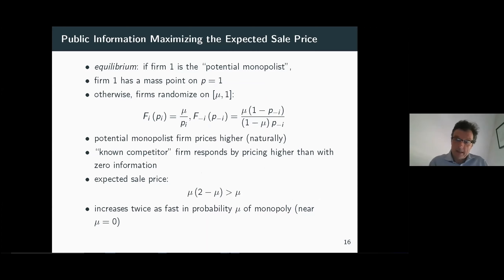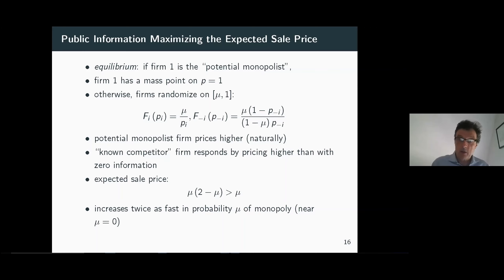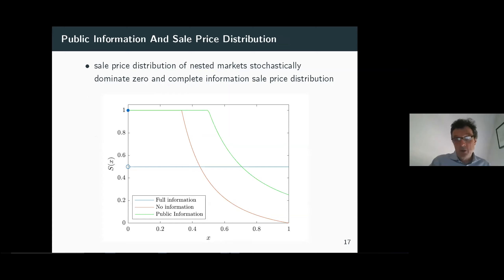We form an equilibrium where the expected sales price is higher — at the margin, twice as high as under zero or complete information. The marginal revenue now increases twice as fast in mu, the probability of monopoly. The resulting price distribution stochastically dominates the no-information price distribution, and the price distribution under public information lies strictly above the distributions from the two extreme cases.